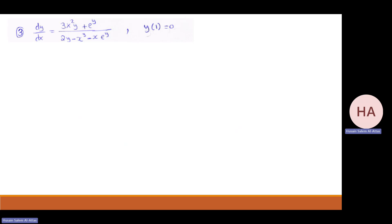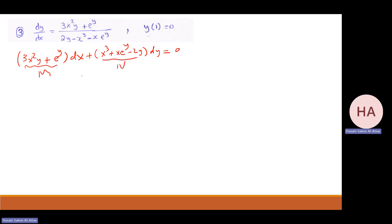This one is not ready — I won't make it ready. So I have 3x squared y plus e^y dx. I need to take the other term to the other side, so I need to change the sign. I have x cubed plus x e^y minus 2y, dy, equals zero. Now it's ready. This is m, this is n. Partial m with partial y: 3x squared plus e^y. Partial n with partial x: 3x squared plus e^y. They are equal — so this is exact.